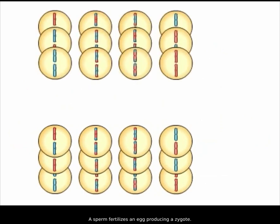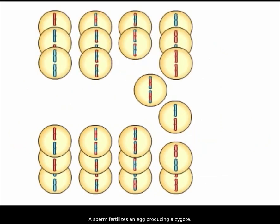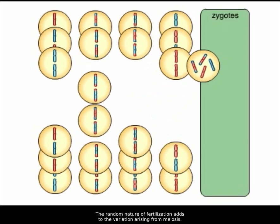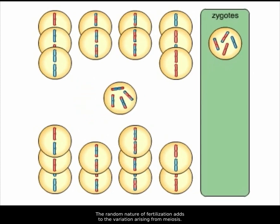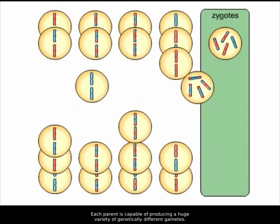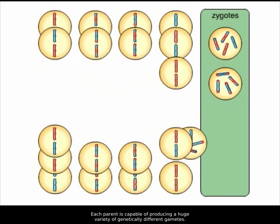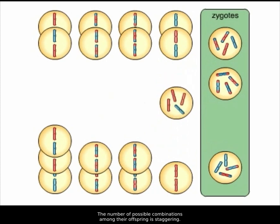A sperm fertilizes an egg, producing a zygote. The random nature of fertilization adds to the variation arising from meiosis. Each parent is capable of producing a huge variety of genetically different gametes, so the number of possible combinations among their offspring is staggering.